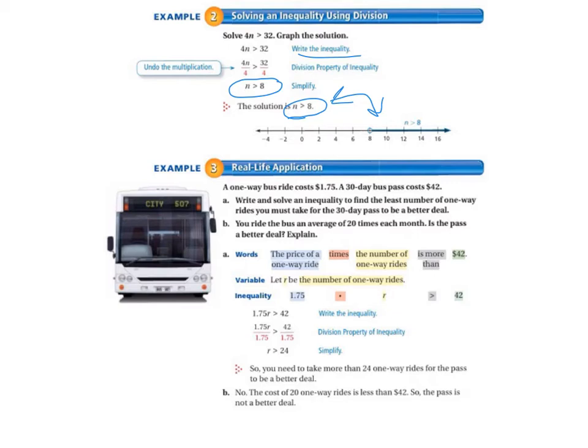Example 3 is our real-life application. A one-way bus ride costs $1.75. A 30-day bus pass costs $42. Our job is to write and solve an inequality to find the least number of one-way rides you must take for the 30-day pass to be a better deal.